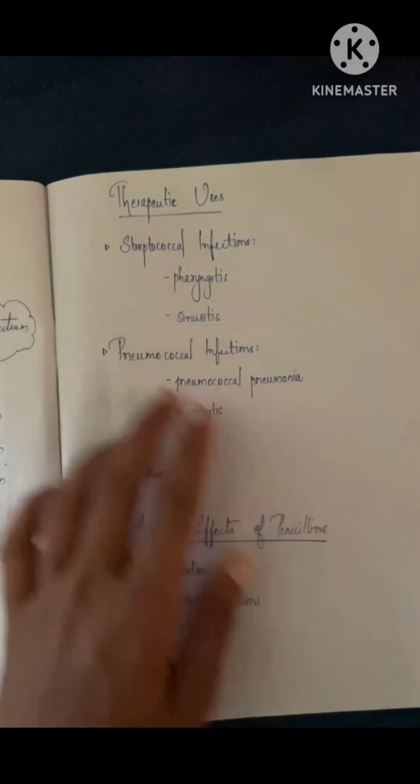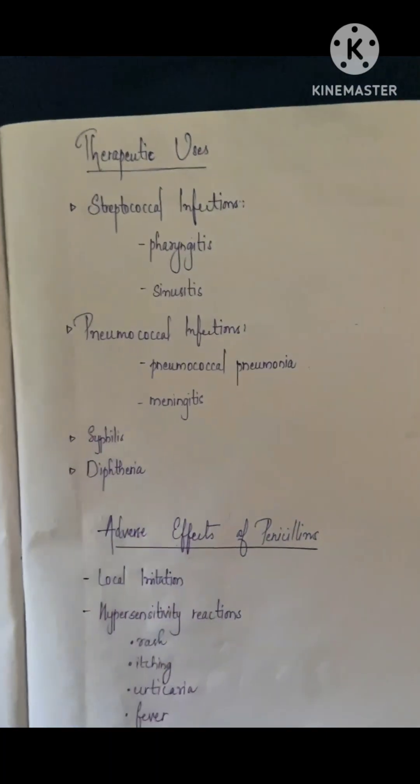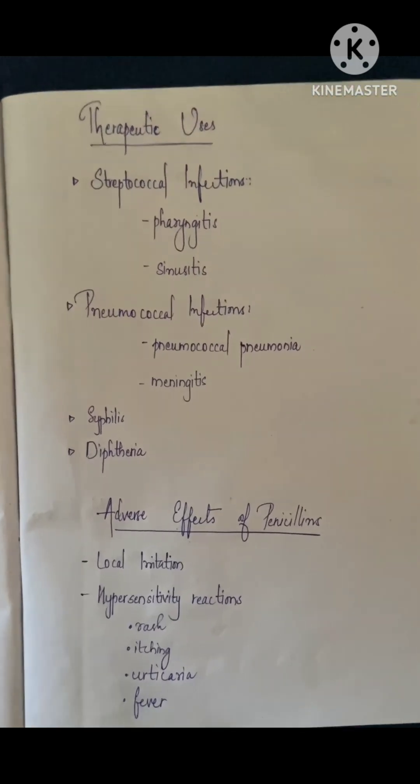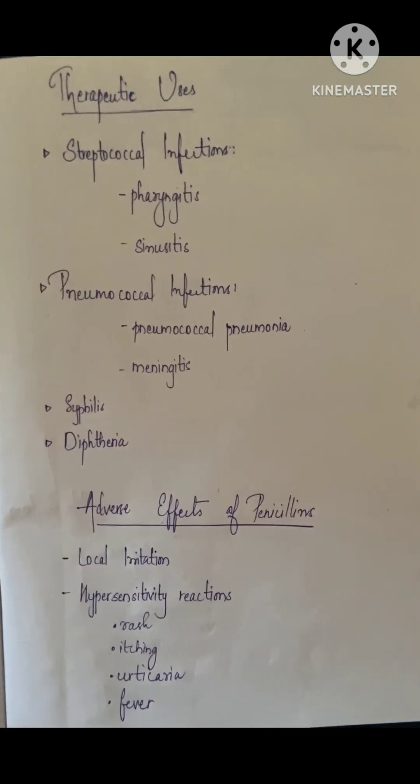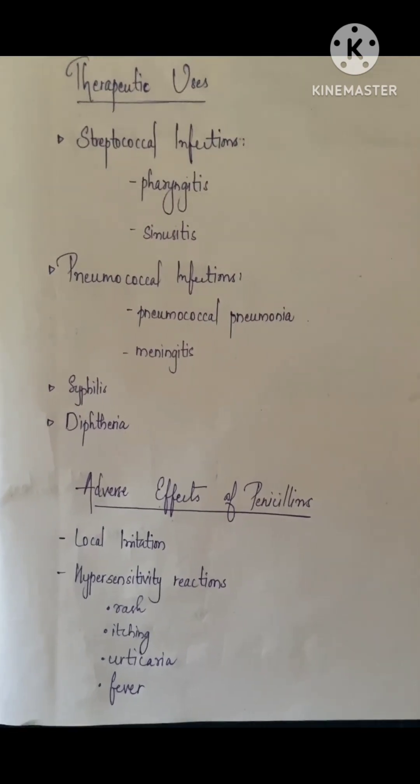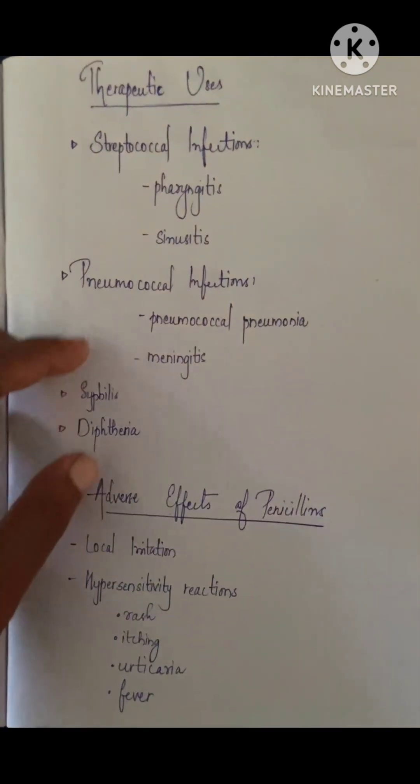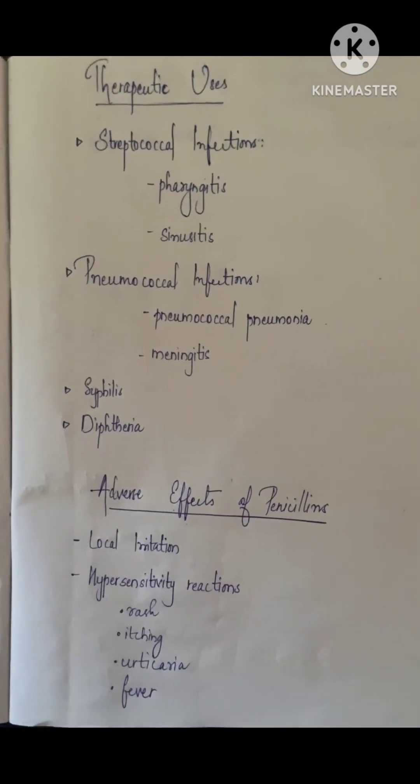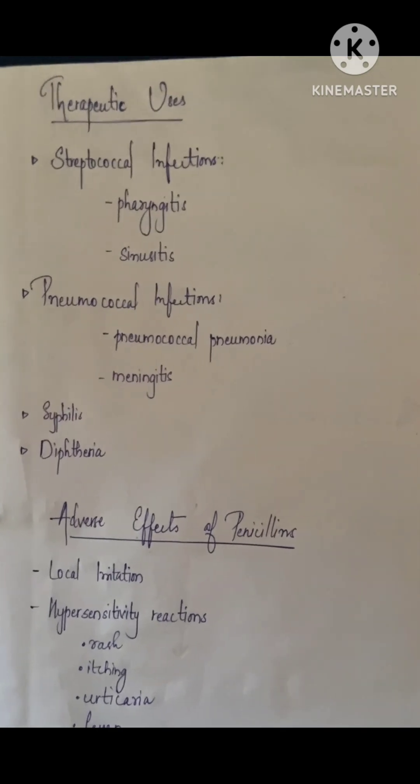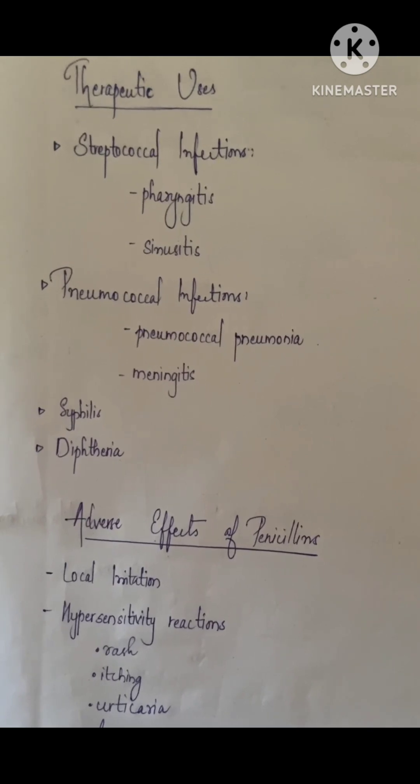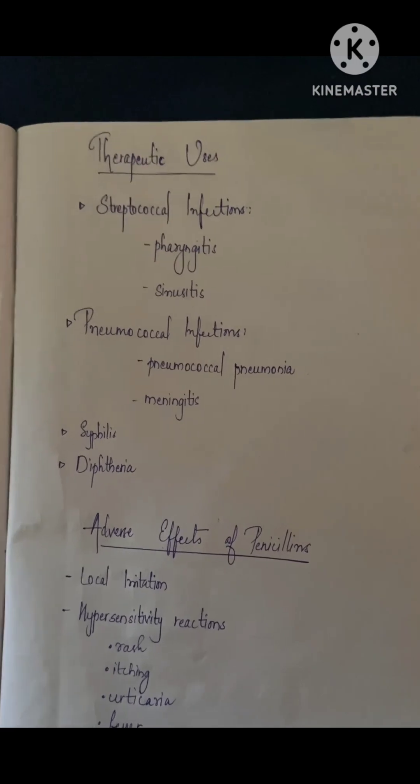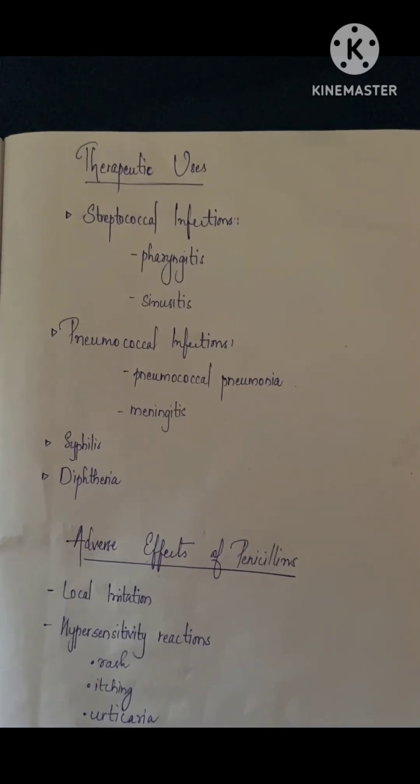These are the classifications of penicillins. Now for therapeutic uses - antibiotics are given for various antimicrobial infections. Penicillin is given for streptococcal infections such as pharyngitis and sinusitis. These upper respiratory tract infections are commonly treated with penicillin. Also for pneumococcal infections such as pneumococcal pneumonia and meningitis, as well as syphilis, diphtheria, rheumatic fever, and rheumatic heart disease.